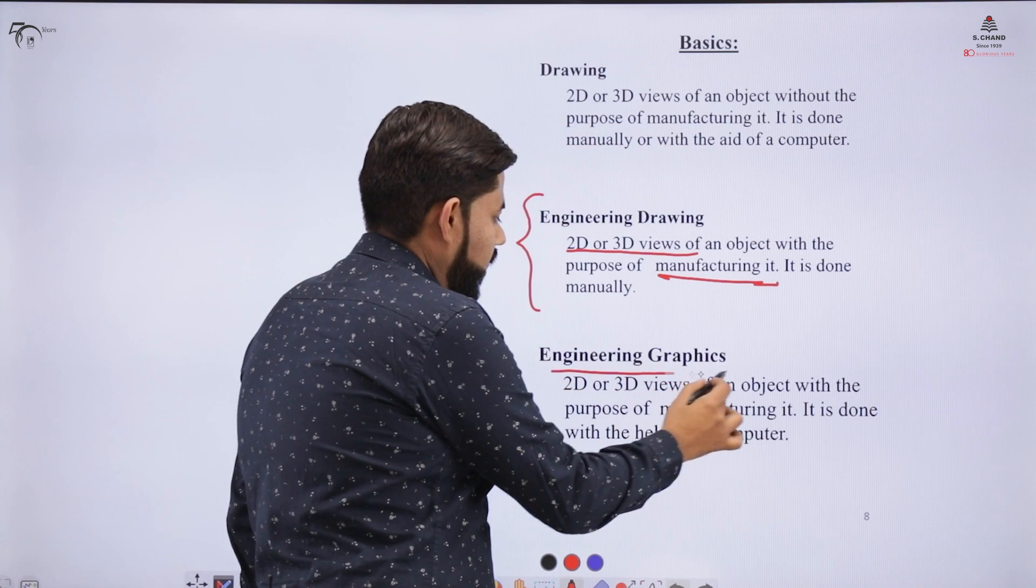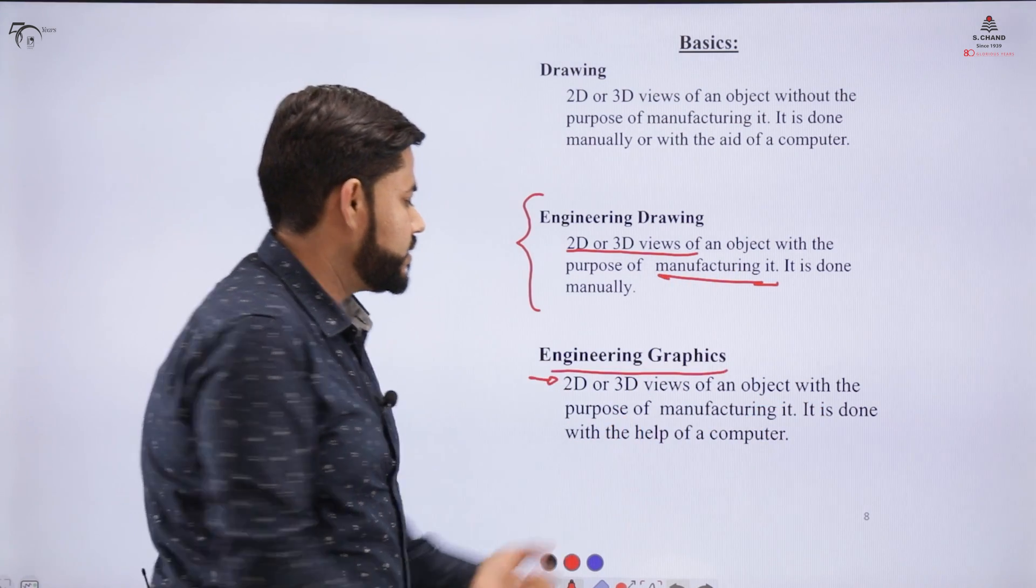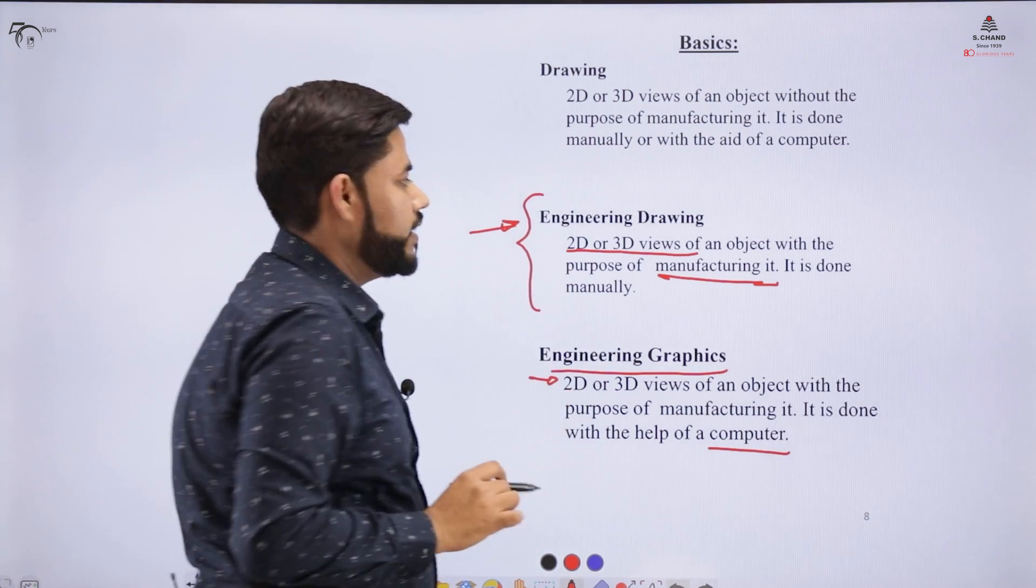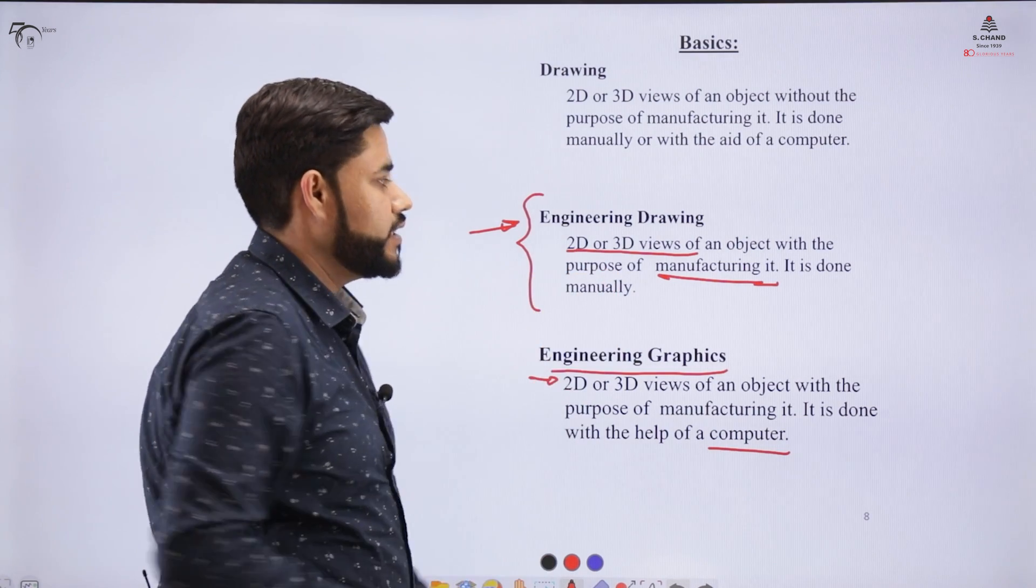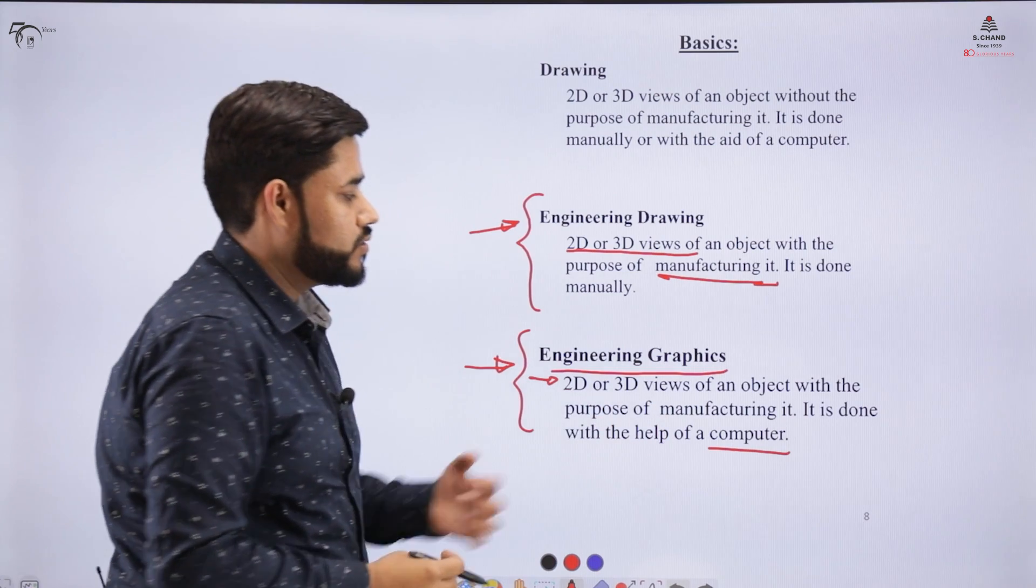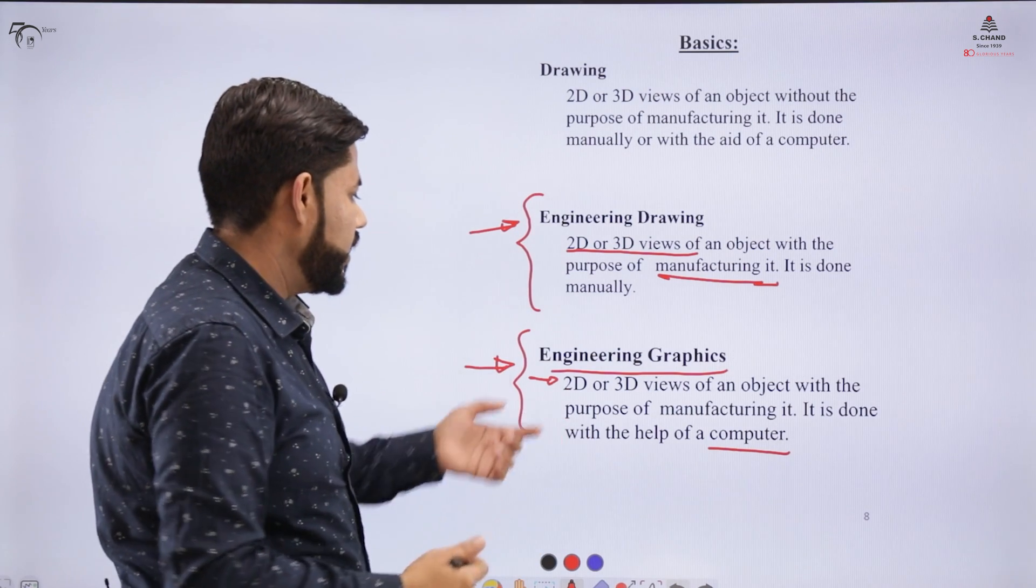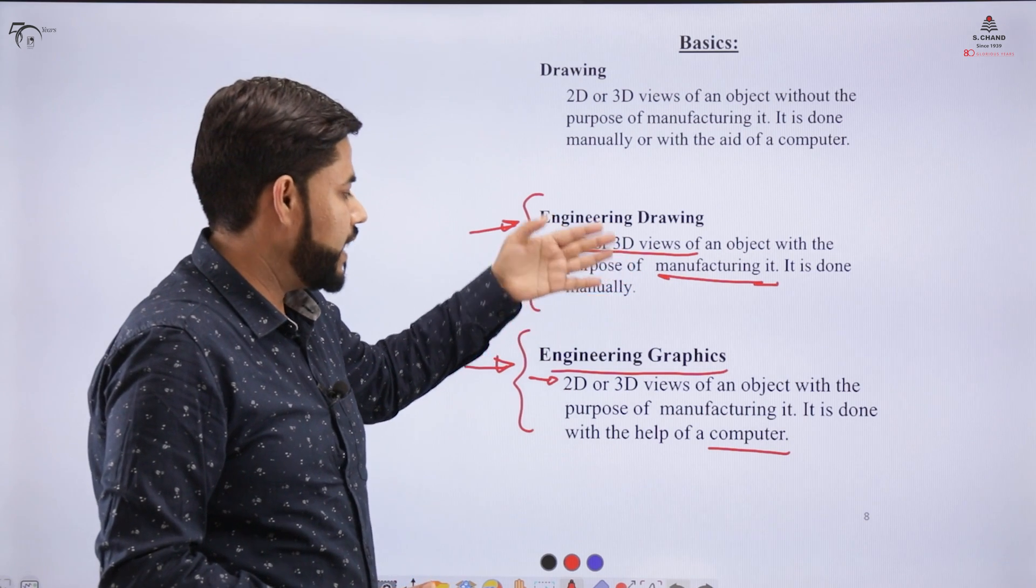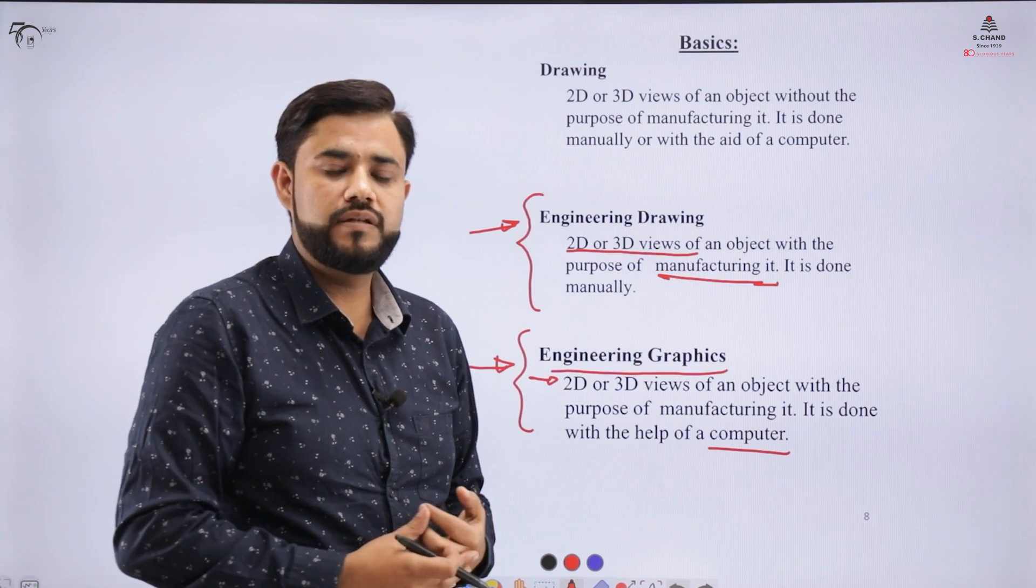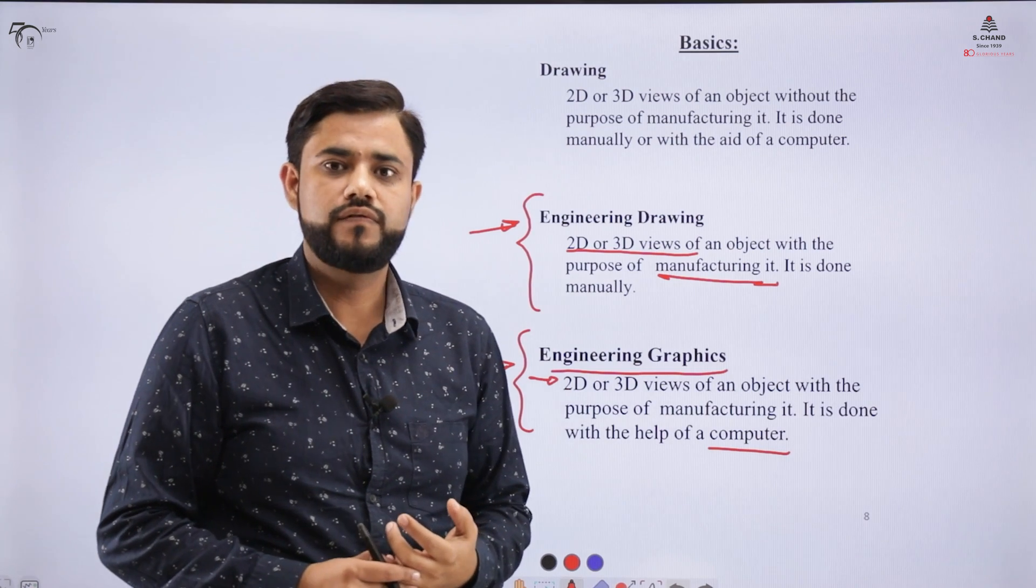What is engineering graphics? Engineering graphics is a 2D or 3D view of an object with the purpose of manufacturing, but done with the help of computers. Some universities use the nomenclature engineering drawing, which is taught manually. In some universities, engineering graphics is used, which teaches concepts with computers. Here we will be naming this course engineering drawing because we will be teaching the manual aspects first.